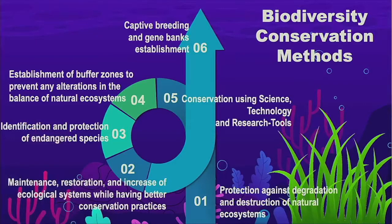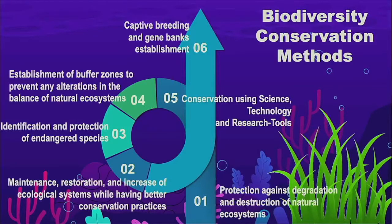Simeo Biotrop has six methods for biodiversity conservation: protection against degradation and destruction of natural ecosystems; maintenance, restoration, and increase of ecological systems with better conservation practice; identification and protection of endangered species; establishment of buffer zones to prevent alteration in biodiversity balance; conservation using science, technology, and research tools; and captive breeding and gene bank establishment. Simeo Biotrop has applied several of these methods, particularly protection against degradation and destruction of natural ecosystems.